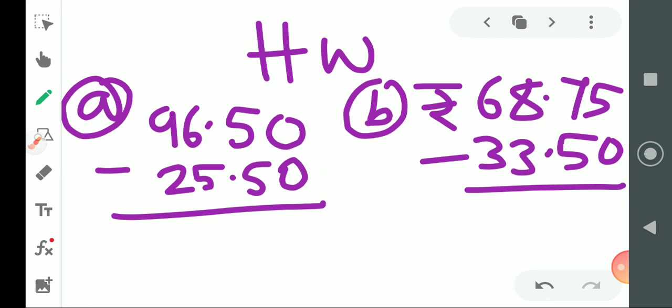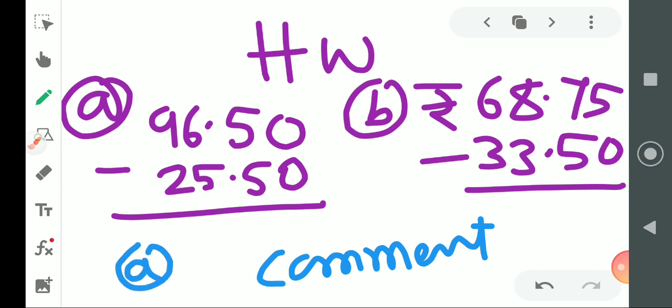These two are given to you as homework. Both homework answers with the question, you will write in comments. At minimum, if you cannot write the full question, then write answer of A and answer of B, so that I can understand which answer you are writing. Comment for sure.